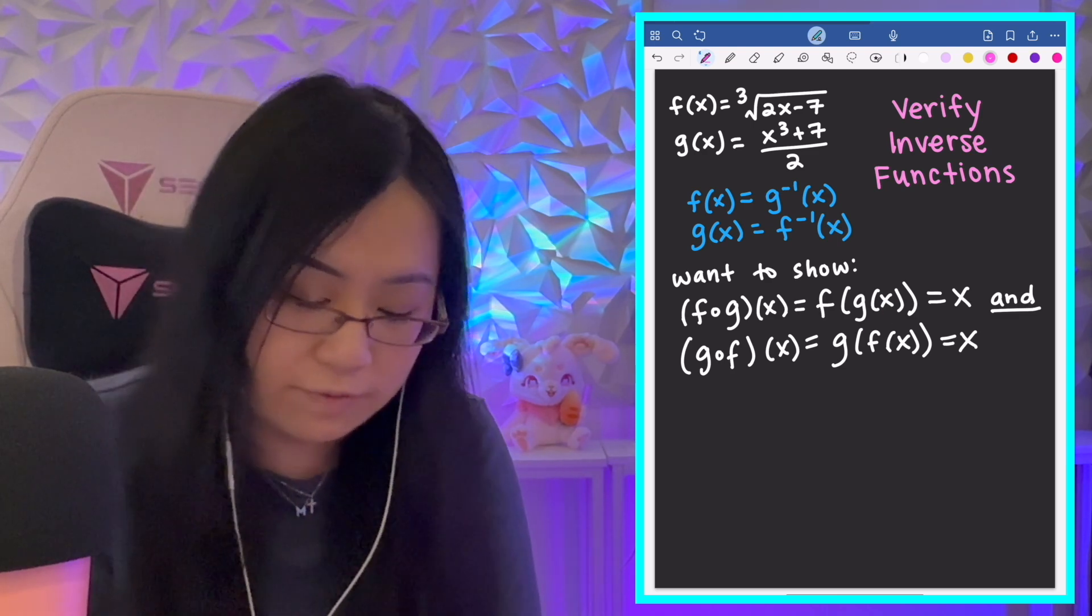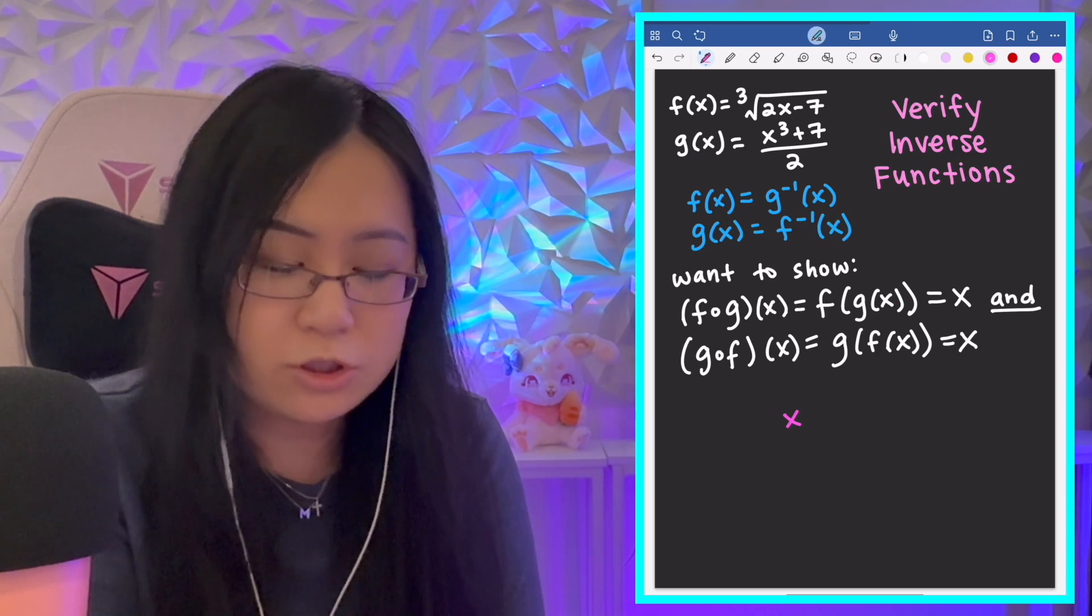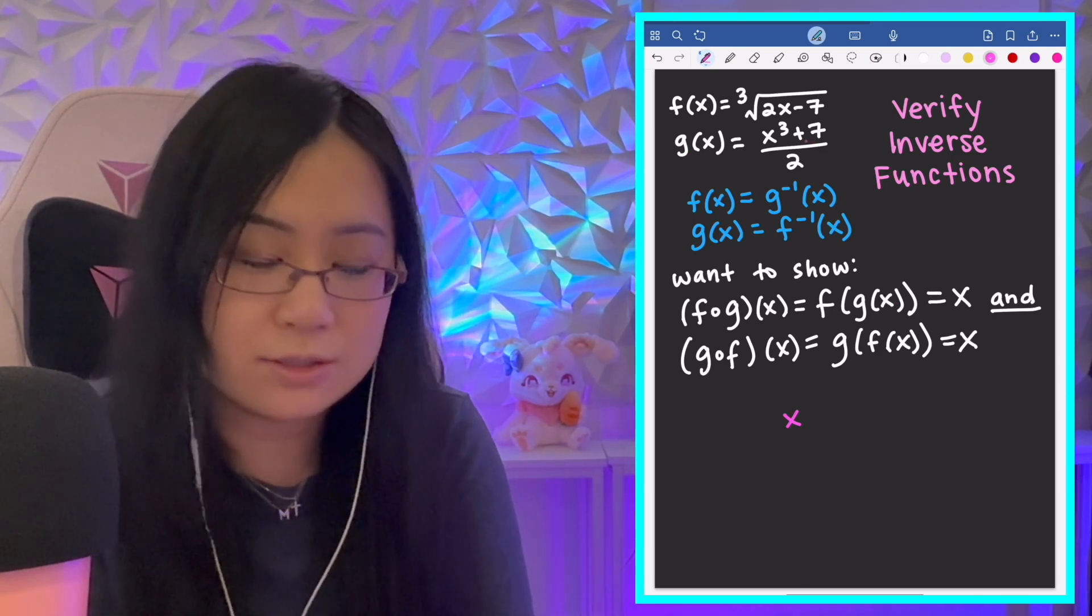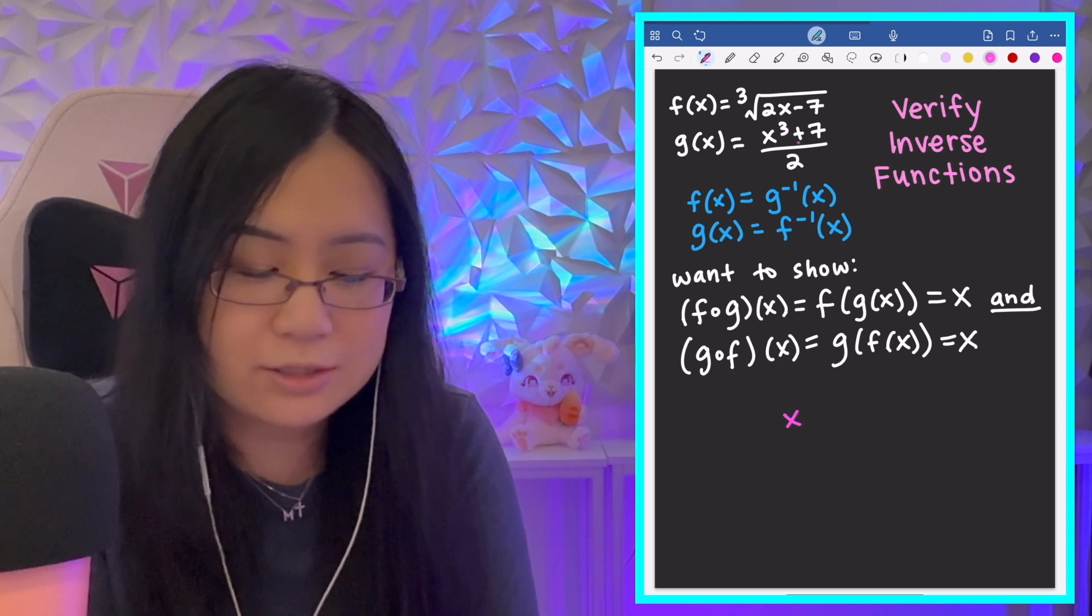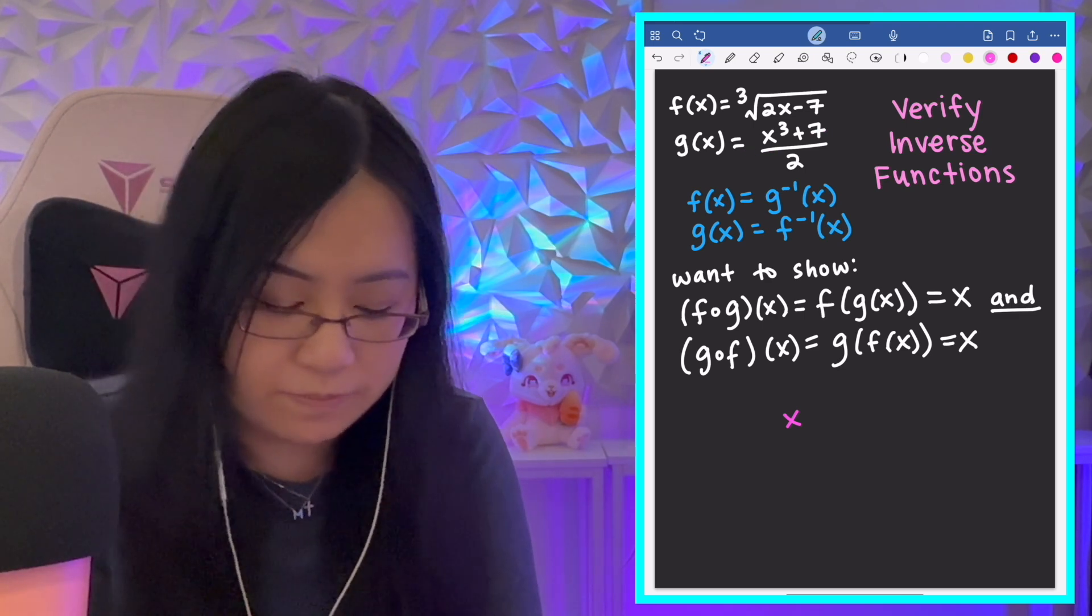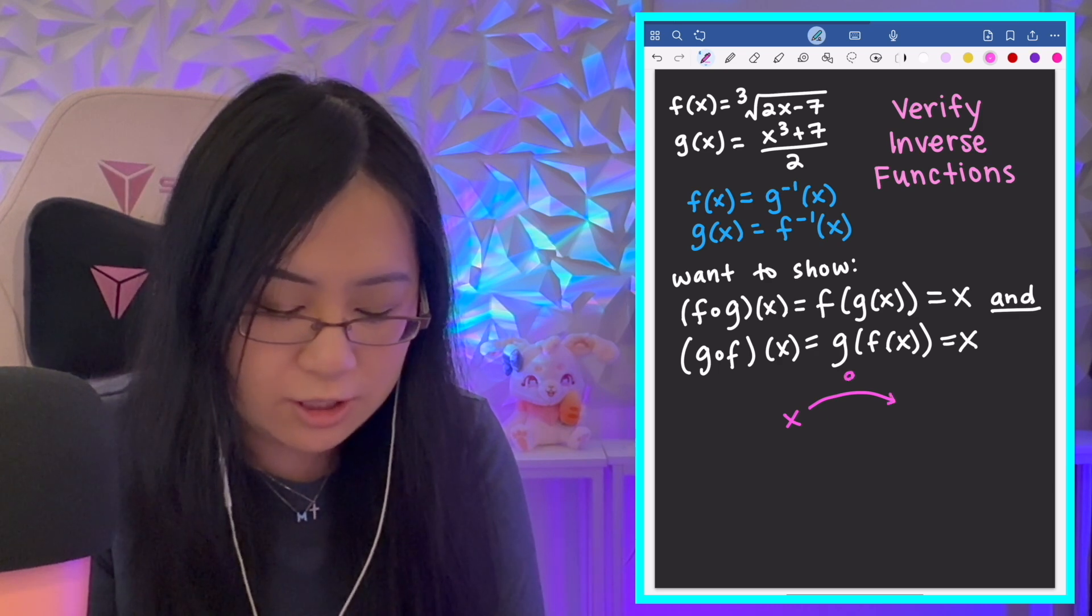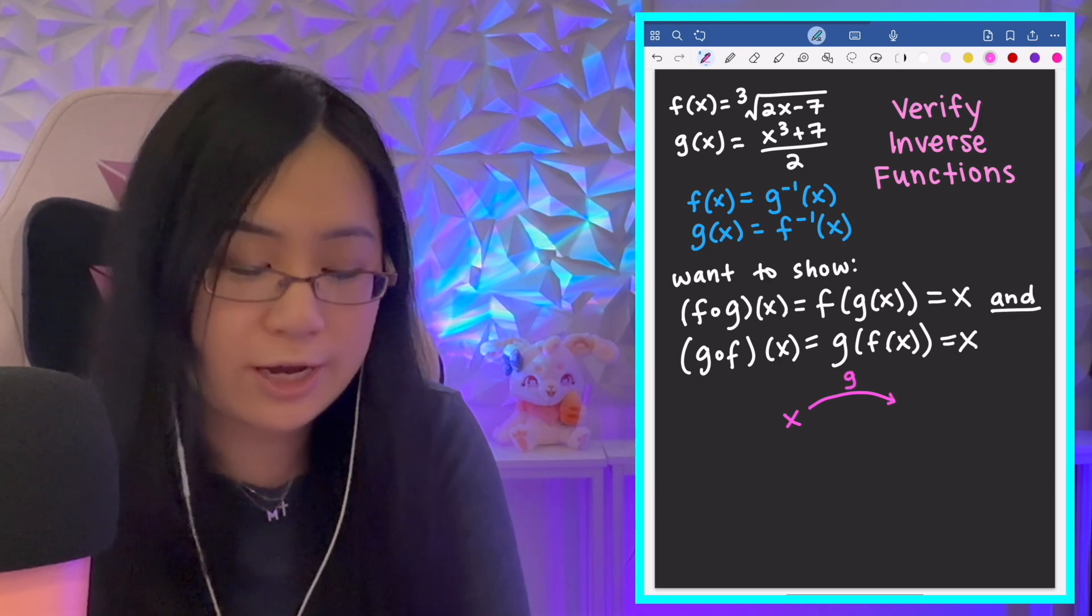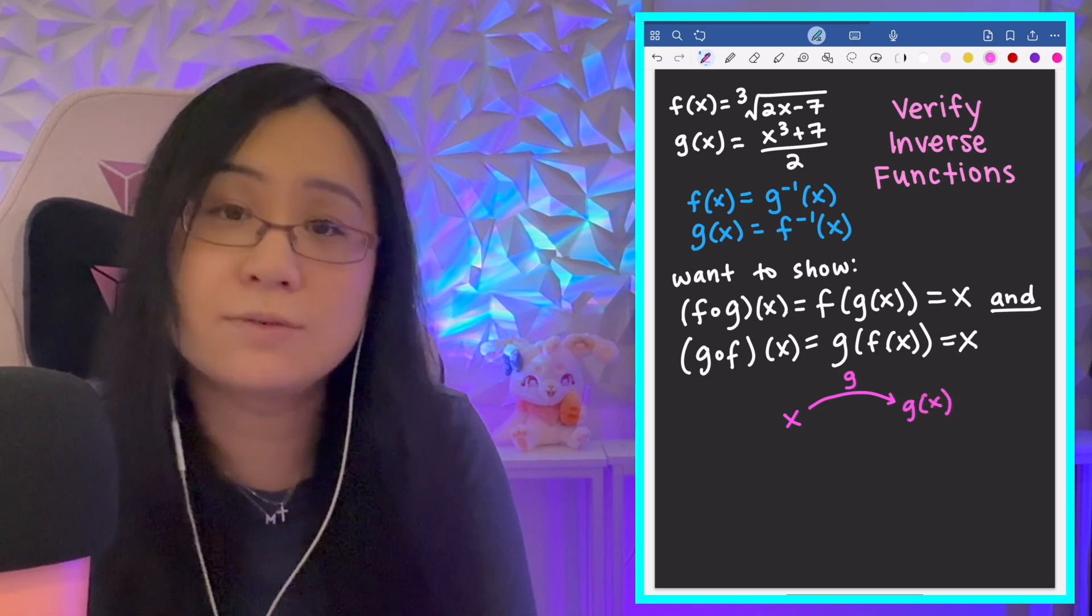So, if we have an input of x, and I input that into the g(x) function, it says take that x value, cube it, then add 7, and then take that whole thing and divide by 2. So, if I apply g, the g function to x, I will get a corresponding output that's g(x).